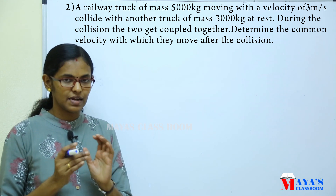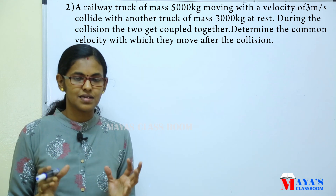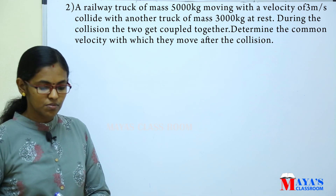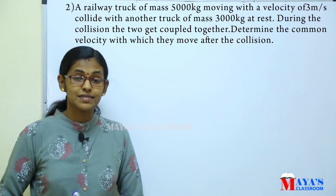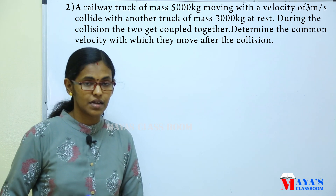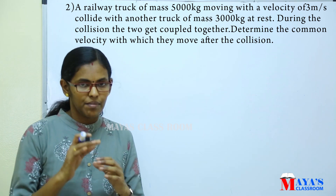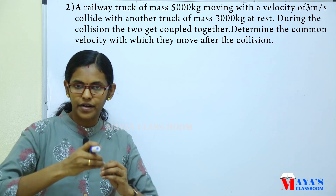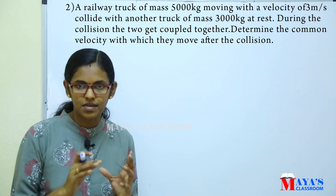The first truck has mass M1 = 5000 kg moving with velocity U1 = 3 m/s. The second truck has mass M2 = 3000 kg and is at rest, so U2 = 0.